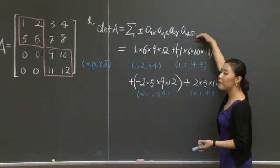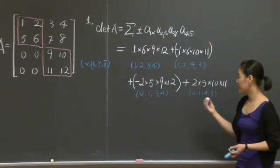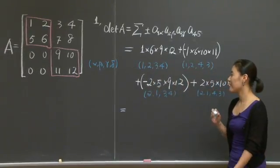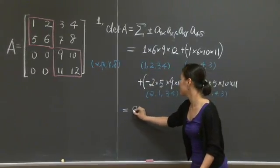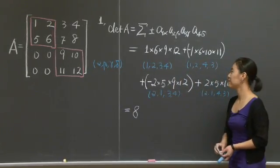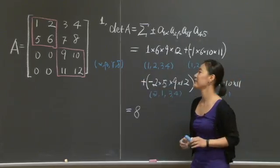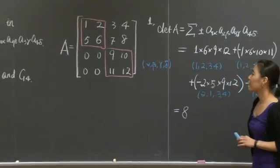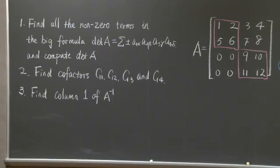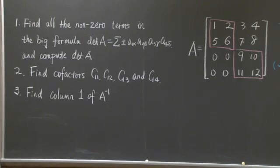This big summation formula comes down to the sum of four terms. And you can compute it. If you don't make any algebra mistake, the result should be 8. Did you get the right answer? All right. Time is really precious. Let's move on to the second part. In the second part, we need to find cofactors C11, C12, C13, and C14.